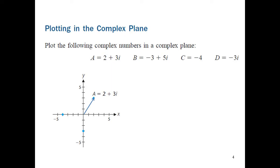The second is b equals negative 3 plus 5i. Having a negative 3 for x and positive 5 for y tells us that this complex number should be in quadrant 2. Note that it should be 3 units to the left and 5 units upward from the origin.